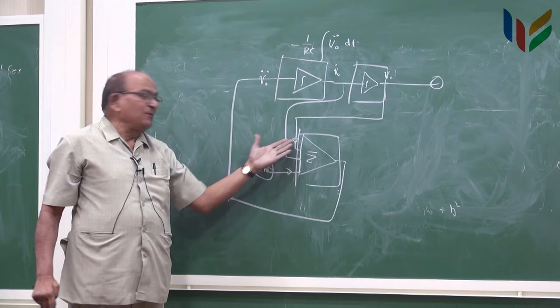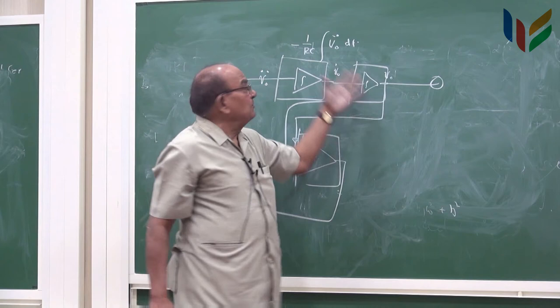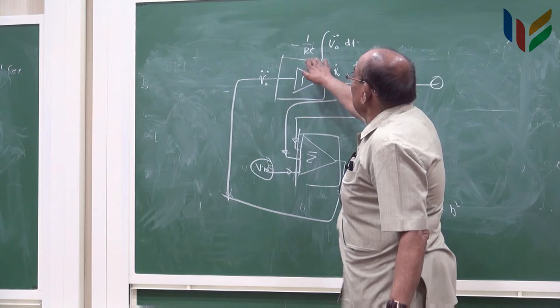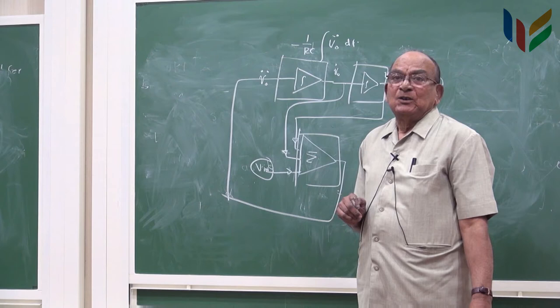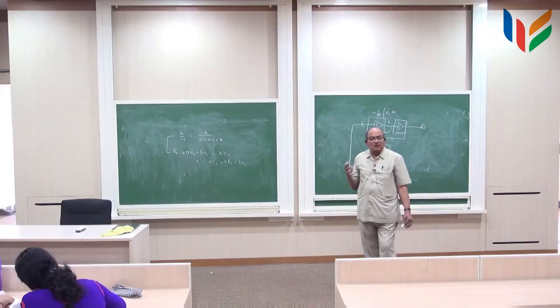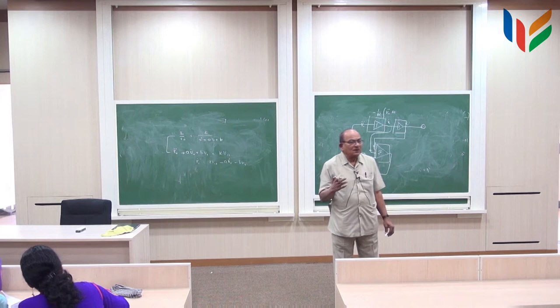Similarly, the second one also will be similar to this. So I can adjust those values, coefficients here, in the weightages here. But the moral of the story is that if you have three operational amplifiers, I can get a second order low pass filter.